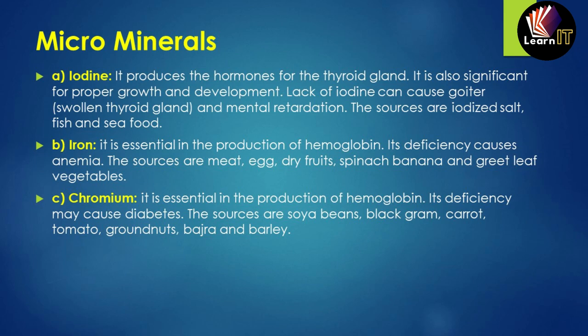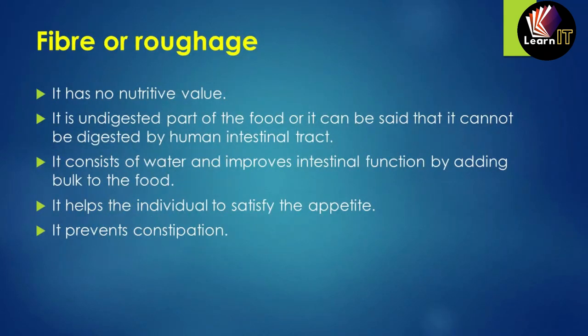Chromium is also important in the production of hemoglobin, similar to iron. Its deficiency causes diabetes. Sources include soya beans, black grams, carrot, tomato, groundnut, and barley.